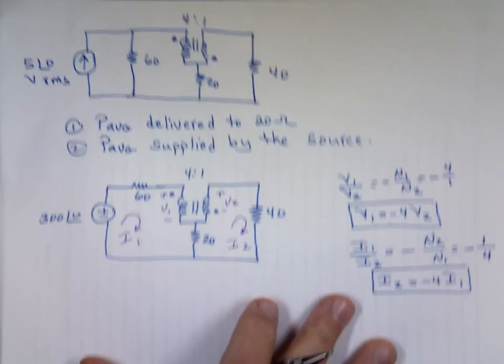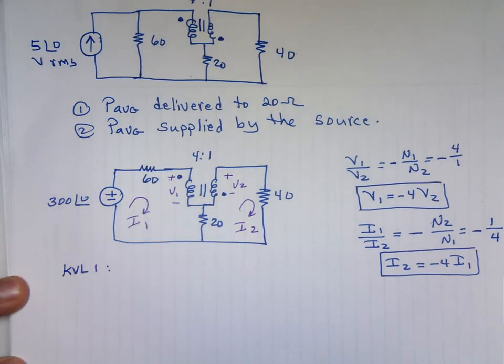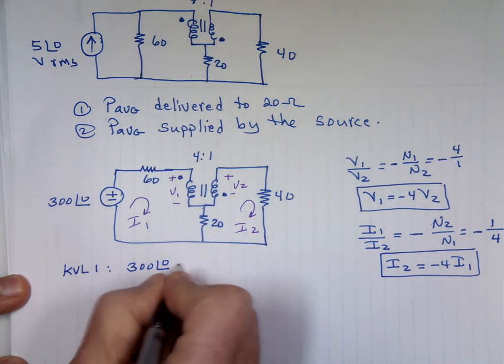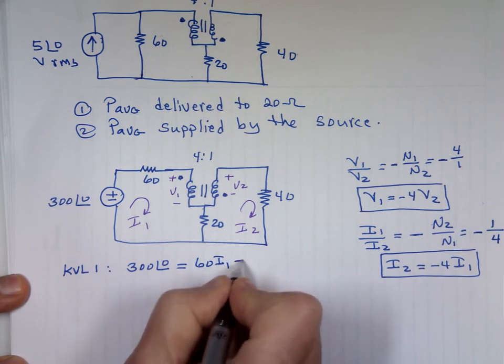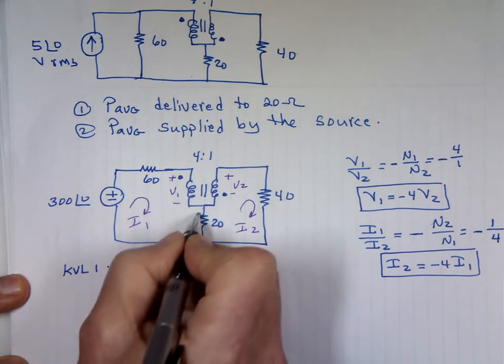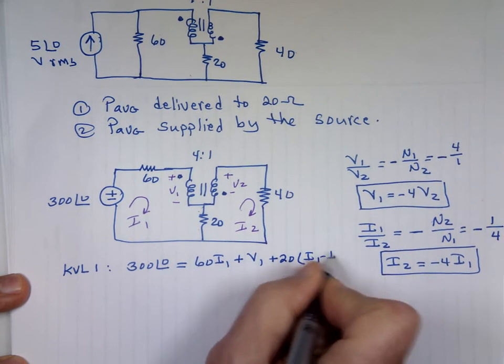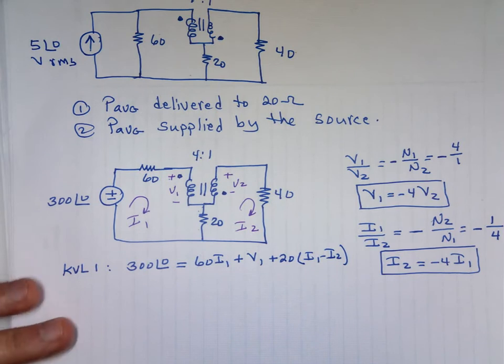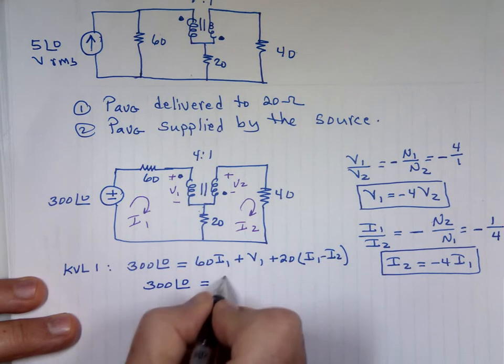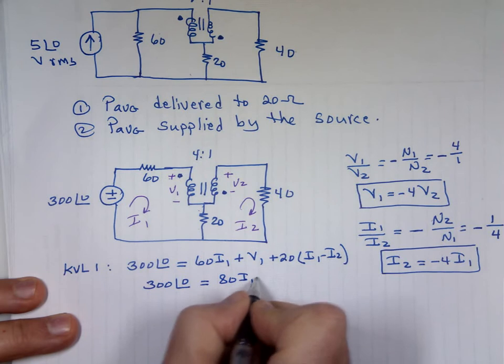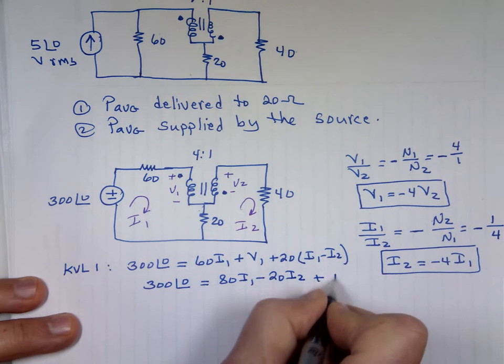Next, I'm going to do KVL right here. KVL 1, that's right there. 300 angle 0 equals the voltage drop here, which is 60 I sub 1 plus v1. Notice plus to minus, v1 is plus, plus to minus 20 times the current down, which is I sub 1 minus I sub 2. If I clean that one, that's 300 angle 0 equals 80 I sub 1 minus 20 I sub 2 plus v1. That's my third equation.